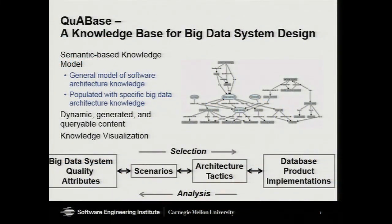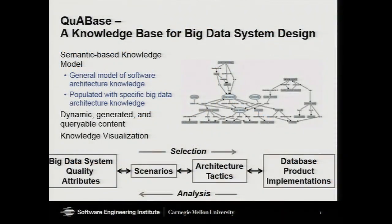To address the talent gap, the second piece of research we did was to develop a knowledge base called KBase Quality at Scale. The innovation here is that it's not just abstract architecture principles — we're taking software engineering and computer science principles for distributed systems and linking them down to concrete implementations in NoSQL technology. So you can start from principles, identify your requirements, express them through scenarios, and through this linkage of architecture tactics get down to the particular technologies that are viable candidates.